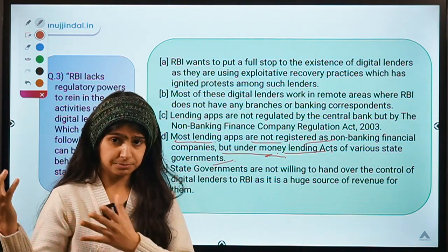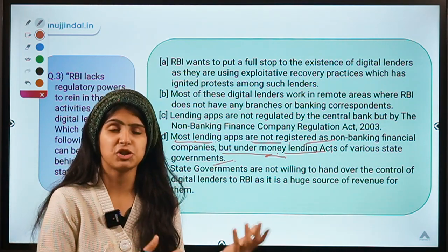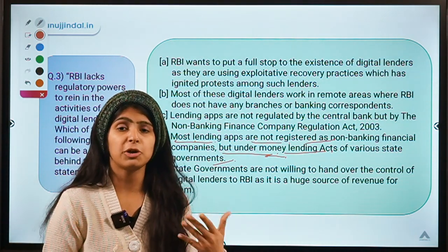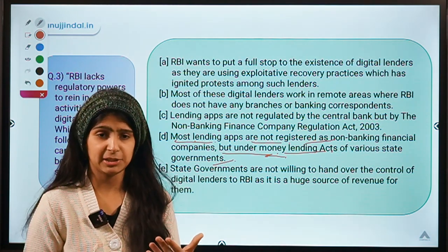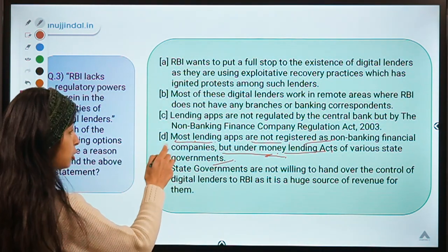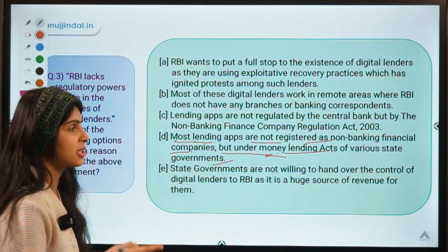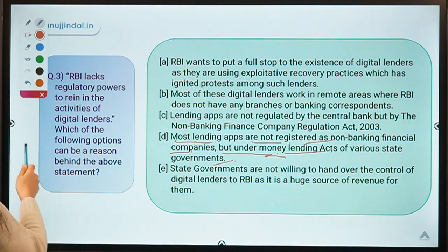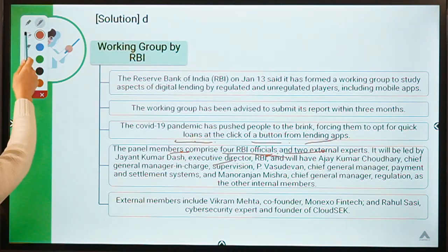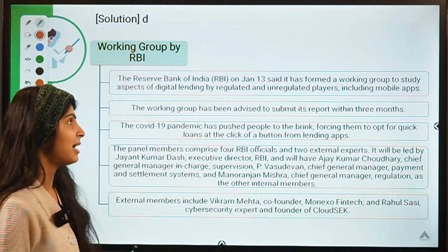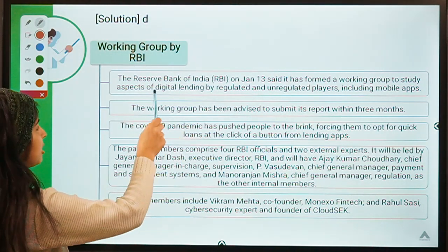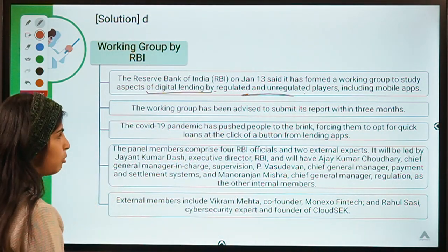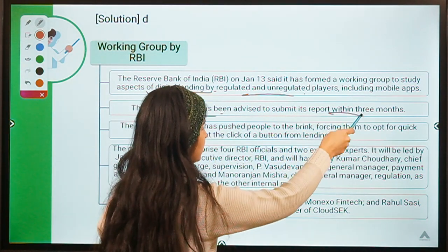Some companies might be registered under Karnataka's state act, some under Punjab's act — it becomes really difficult to see how many of them are not in legal compliance or how many are violating laws. Although they are working as NBFCs, they are not registered as NBFCs, which is why it is difficult for RBI to control them. RBI has set up a working group to work upon this issue and devise a structure to control these lending apps. The working group has been asked to submit its report within three months.